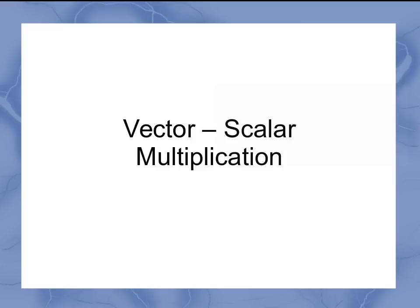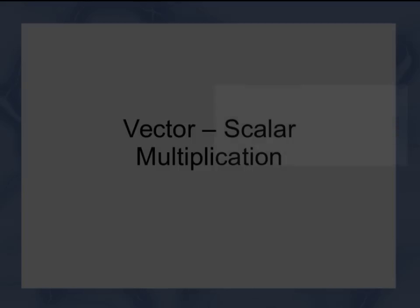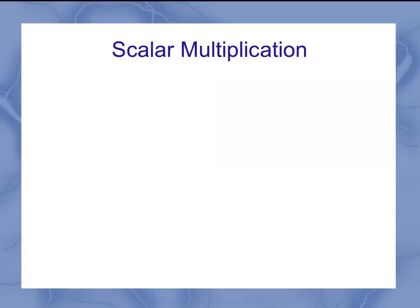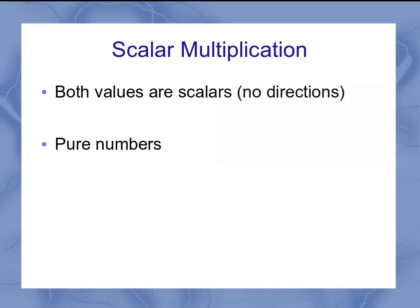Now let's look at vector scalar multiplication. If we're talking just normal multiplication, that's scalar multiplication. Both values are scalars, meaning neither one of them has a direction. We're used to seeing this in terms of pure numbers, things like 2 times 3 equals 6.